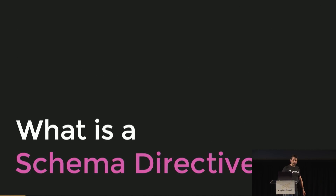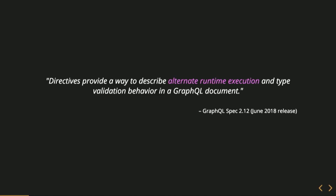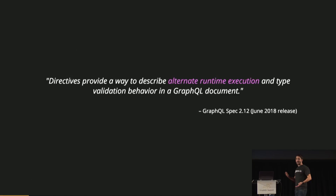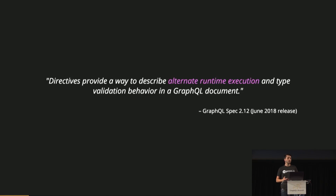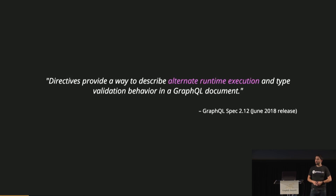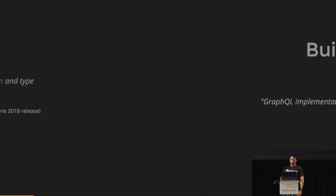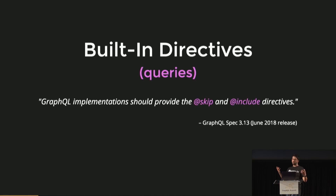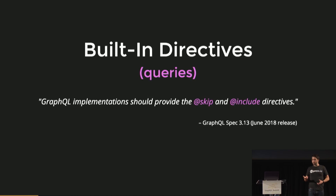So what is a schema directive in the first place? To answer that, we can go to the GraphQL spec. Directives provide a way to do kind of this alternate runtime execution — we can think about it like changing the behavior of something at runtime. If we have a resolver that resolves with a certain piece of data, we might want to affect the way that resolver works at runtime.